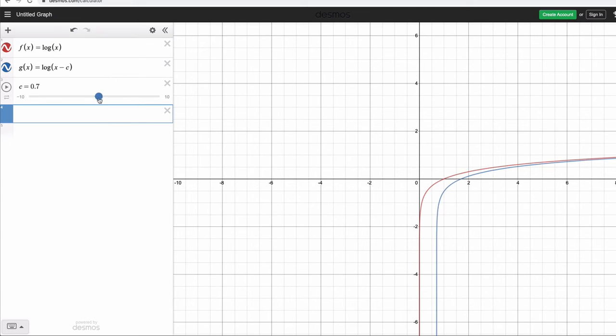Here, if I make c zero, there's no movement. But if I subtract one, notice that the log function here moved once to the right. And the more you subtract, the more you move to the right.